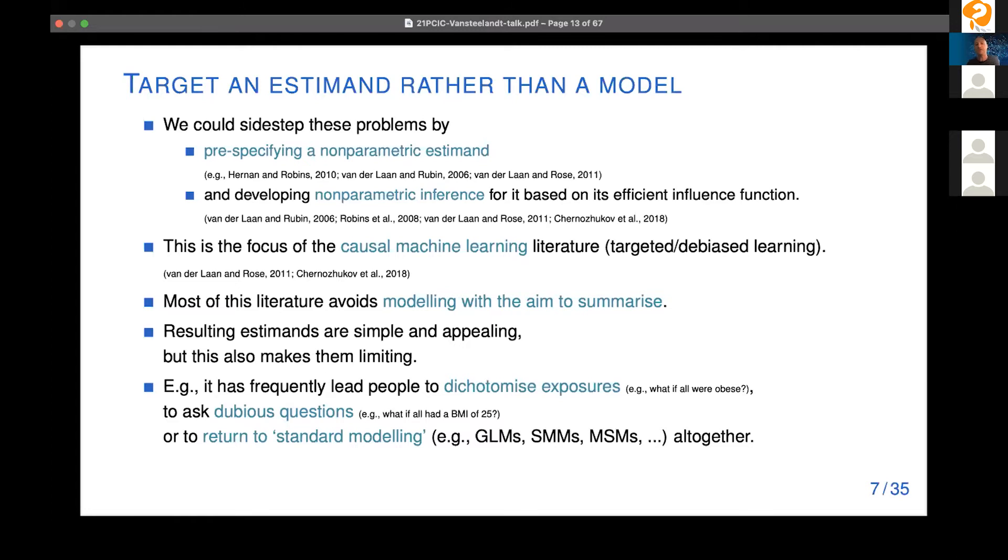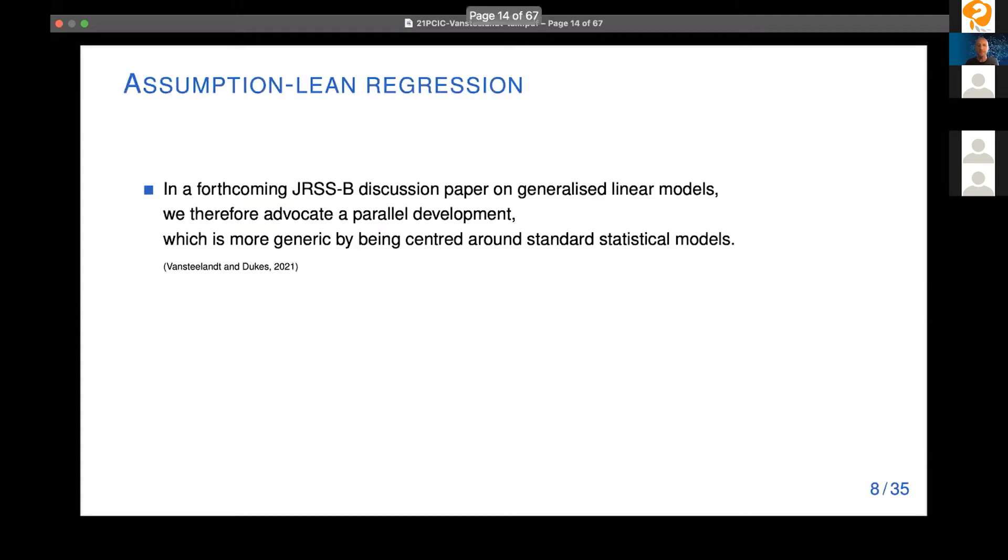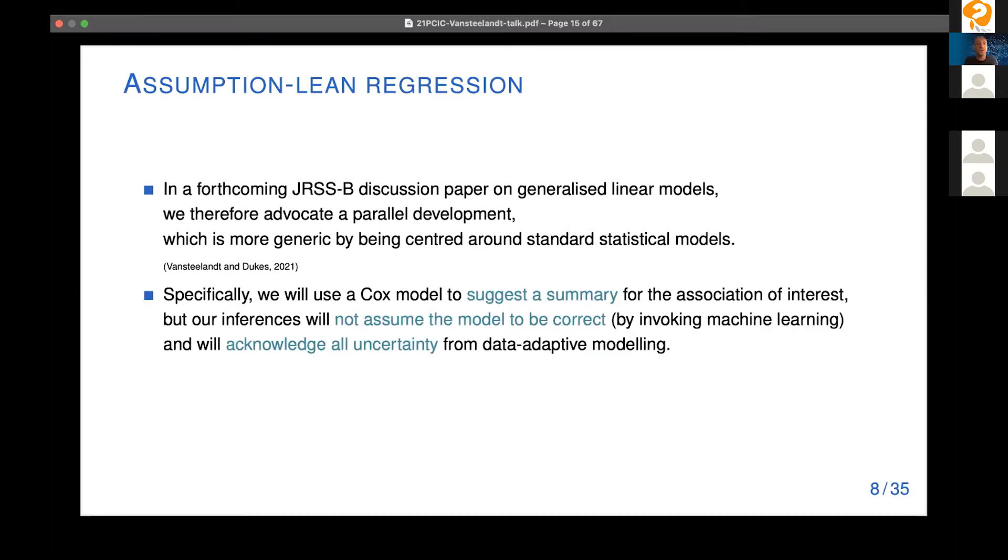For instance, Cox marginal structure models are very common for dealing with time varying exposures in survival analysis. And of course, once we go back to standard modeling, we're also back with the problems I was discussing before. In a forthcoming JRSSB discussion paper on generalized linear models, we therefore advocate a parallel development, not aiming to be a substitute for the approach that I just discussed, but we basically aim for a more generic development that can easily handle continuous exposures and can easily bring in complexities basically by being centered around standard statistical models. And so today I'm going to basically extend this approach to Cox regression.